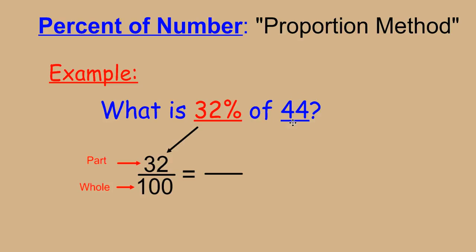Then we have to realize since we're finding 32% of 44, 44 is actually the whole. We write that number on bottom so we're comparing the same thing. If we have part to whole on this side, we want part to whole on the other side. The part is what we're trying to find.